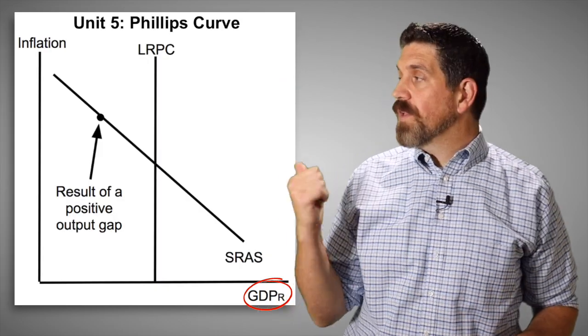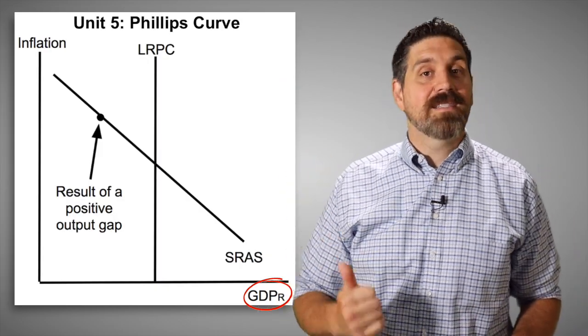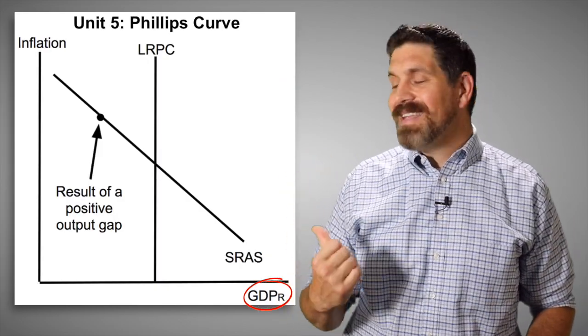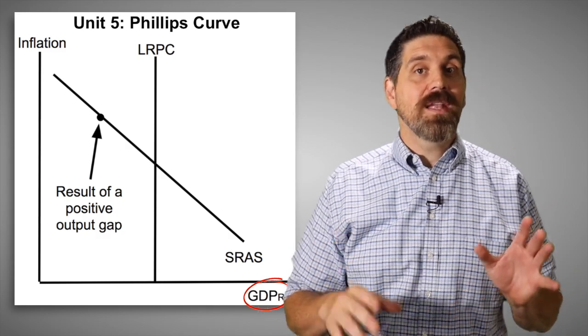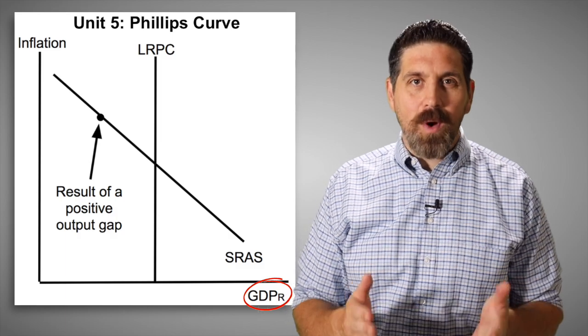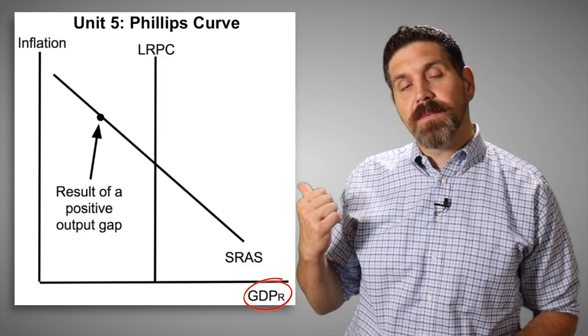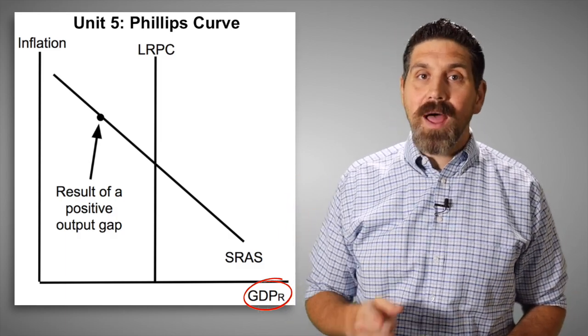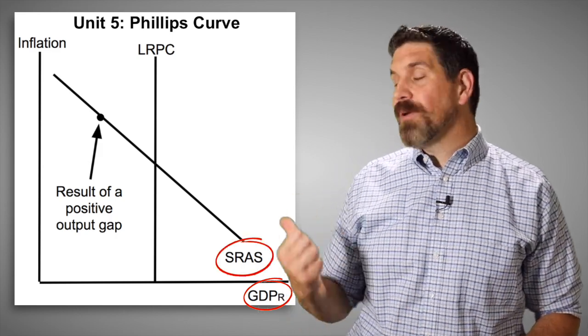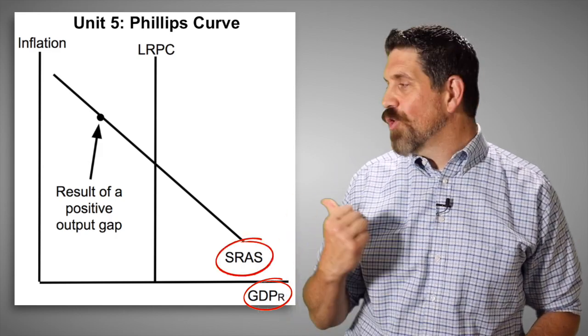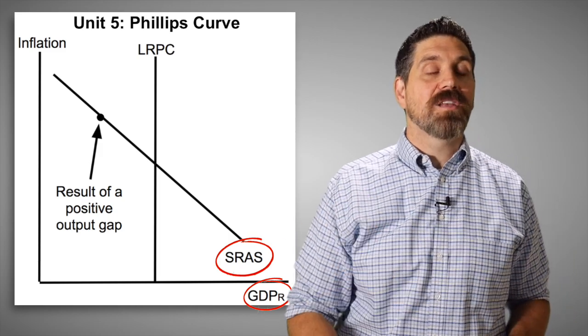In unit five, you learn about the Phillips curve. Yes, on the y-axis, it's inflation. But down here, it's not GDP. It's unemployment. It shows you the relationship between inflation and unemployment. In the long run, there's no relationship between them. So there's a long run Phillips curve, and that's correct. But in the short run, there is an inverse relationship between inflation and unemployment, but it's labeled the short run Phillips curve, not short run aggregate supply. So two mistakes on that graph.